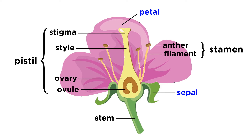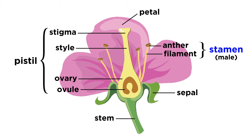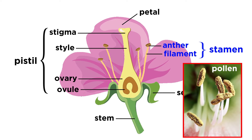But the sepals and petals are just the structures surrounding the important reproductive parts of the flower. While gymnosperms have separate male and female cones, most angiosperms have both male and female reproductive organs in the same flower structure. In this situation, the male reproductive structures are called stamens, and the female reproductive structures are called pistils. The stamen, or male reproductive structure in a flower, consists of two parts, the anther and the filament.